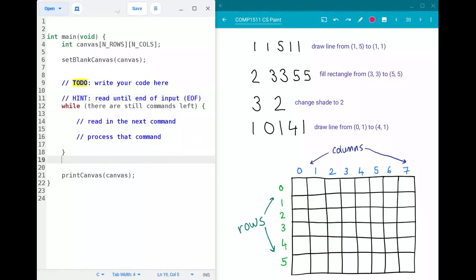So in terms of reading in the commands and processing the commands something I know people have been finding a bit tricky is how do you cope with the fact that the commands are different lengths. So for example command number one draw a line has always got four numbers. Command number two has four numbers so that's fine. The command number three change shade just has one number afterwards. So if you always just scan in five numbers straight away it's not going to work when you try and do this change shade command.